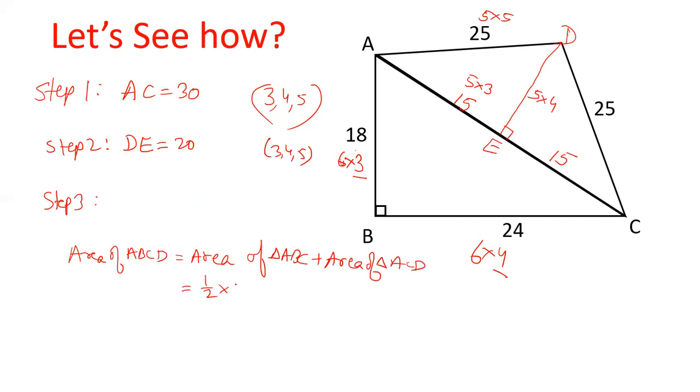ABC ka area, we're half base into height. Area of ACD who are half base into height. ABC ka base 24, height hai 18. ACD ka base hai 30, height hai 20.